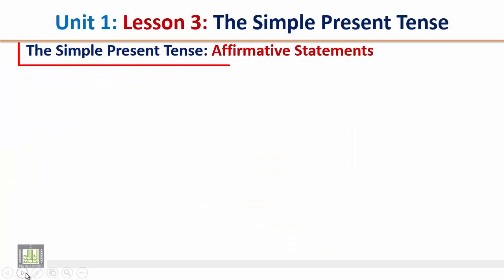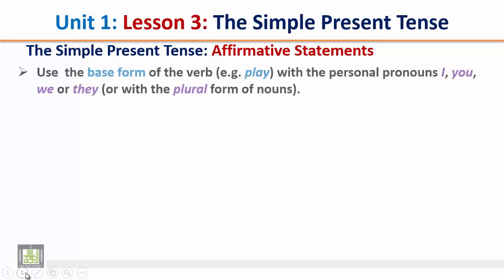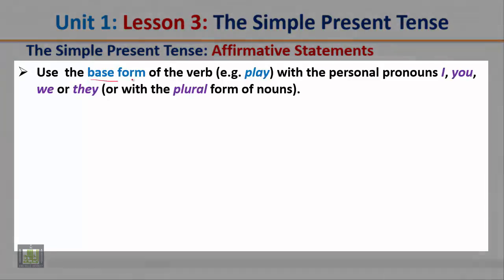The simple present tense — affirmative statements. Use the base form of the verb, for example 'play', with the personal pronouns I, you, we, or they, or with the plural form of nouns. So in the present simple tense, we use the base form of the verb after the pronouns I, you, we, or they, or after any plural form of nouns.